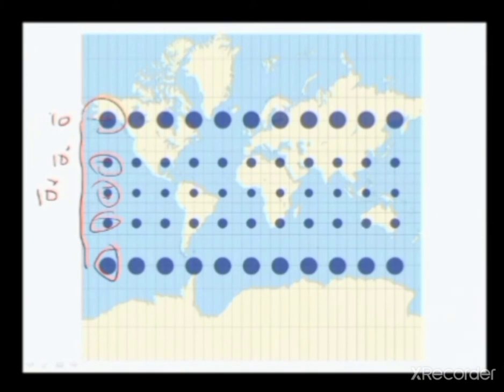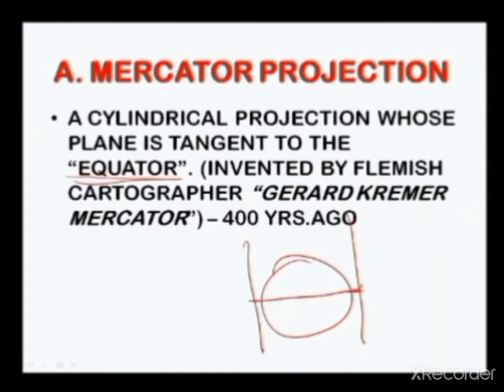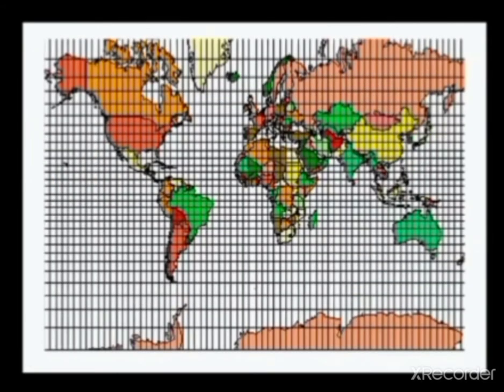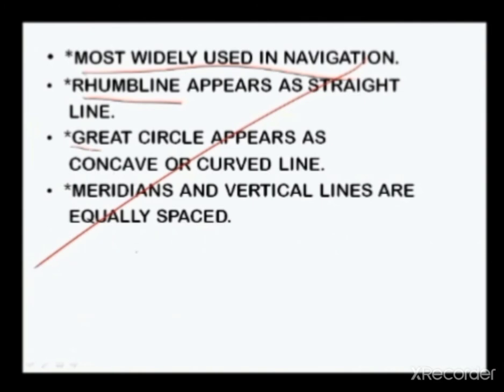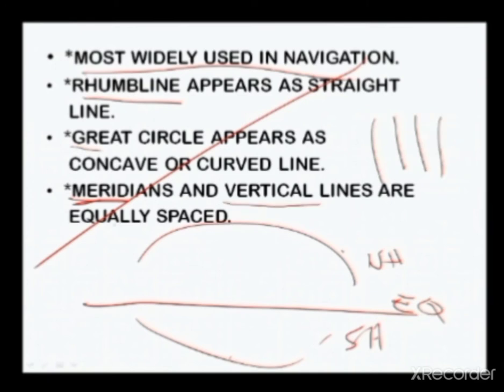Mercator is a cylindrical projection whose plane is tangent to the equator — meaning the cylinder is standing upright and the point of tangency is the equator. Mercator projection is widely used in navigation, and the rhumb line or your course line is a straight line, while the great circle appears as a concave or curved line. Your meridians or longitude lines are vertical lines and are equally spaced.